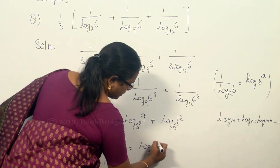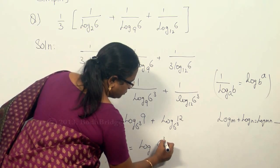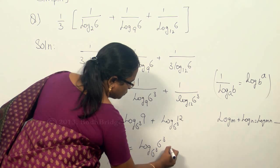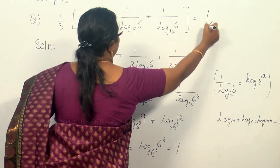Now 216 is nothing but 6 cube. So this is log of 6 cube to the base 6 cube, and therefore the answer is 1.